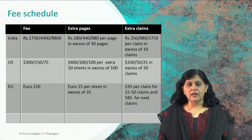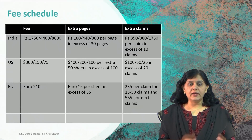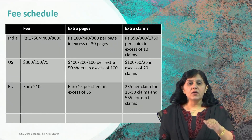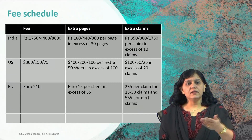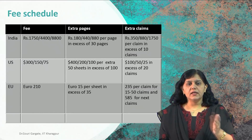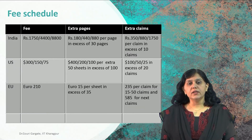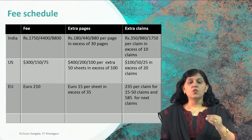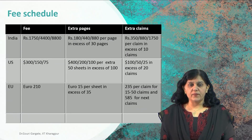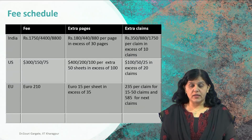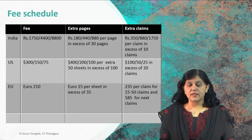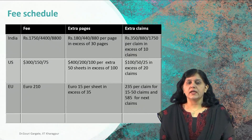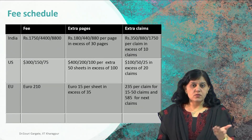Let us compare with the USA. In India, we have seen three categories. In the USA, if you file a patent, there are also three categories: small entity, micro entity, and then the remaining — normal or others. The USA has given clear guidelines on who comes under micro entity and who comes under small entity, and you have to give financial proof accordingly. The fee difference between these three categories in the USA is a major one, as in India as well.